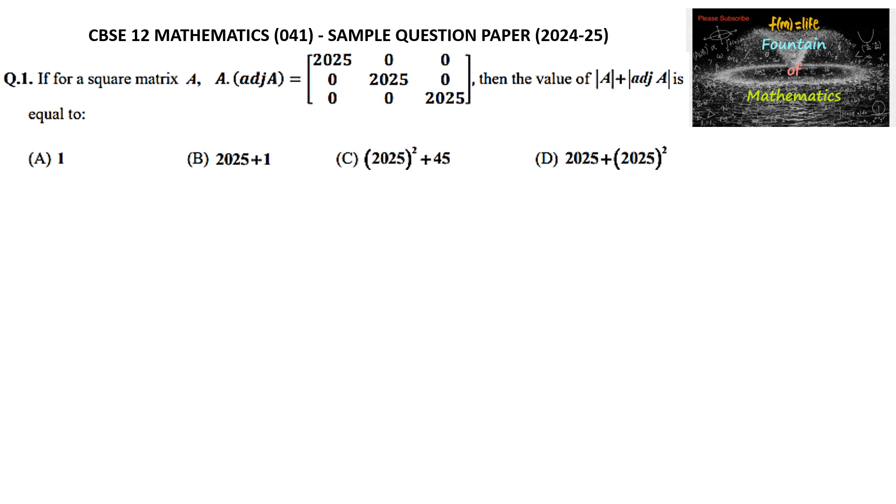If for a square matrix A, given that A into adjoint of A, a 3 by 3 matrix with 2025, 0 and 0, 2025, 0 and 0, 2025 on the right side.